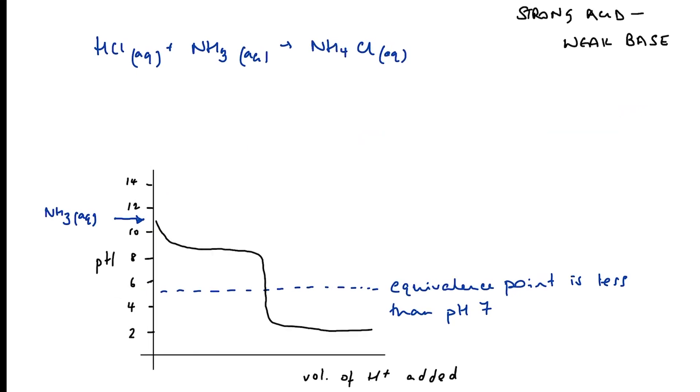You'll also notice that for a strong acid-weak base titration, the equivalence point is less than seven, typically around pH five. And we've got exactly the same explanation as the ammonium chloride is formed. So we get to the point where we have neutralization. So the hydrogen ion concentration is equal to the hydroxide ion concentration. So we have neutralization. However,